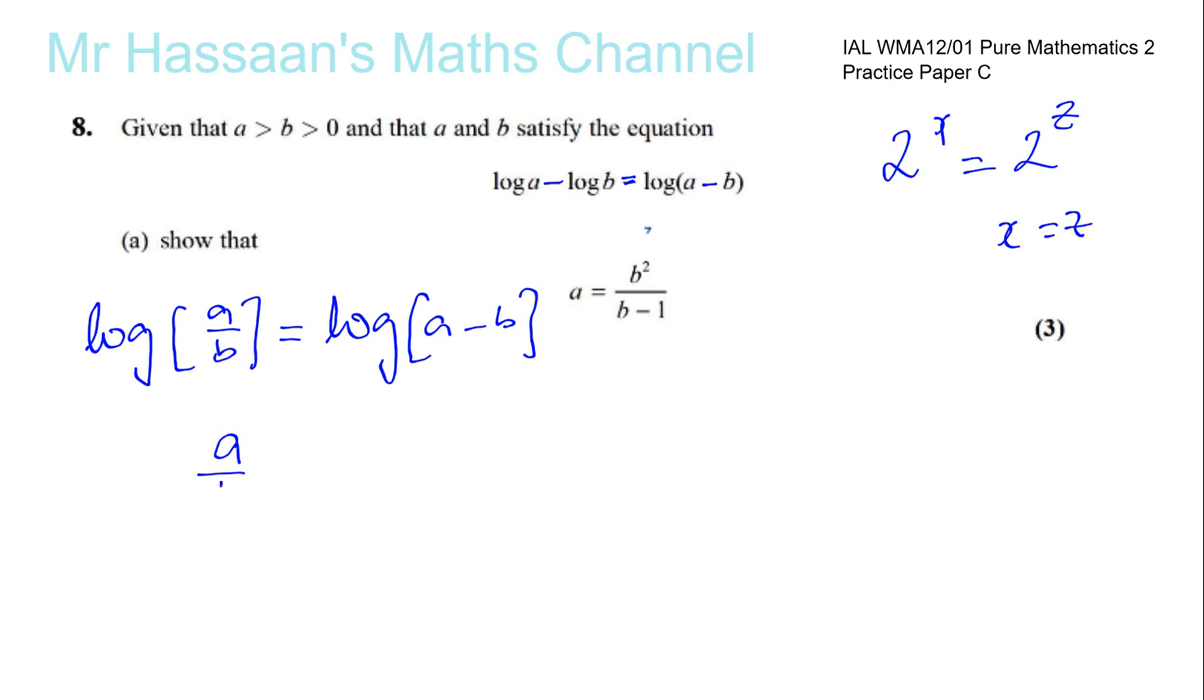So, that means A over B must be the same as A minus B. Okay, so, we want to show that A equals B squared over B minus 1. So, we're going to make A the subject of this. So, let's, the first thing we do, multiply through by B.